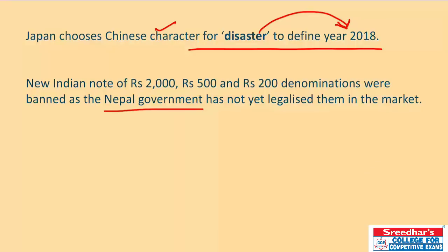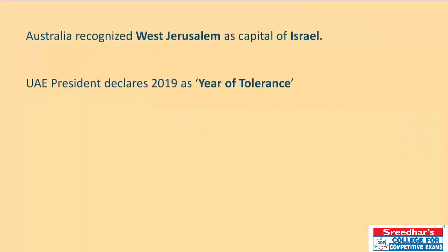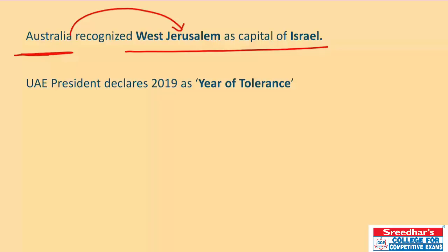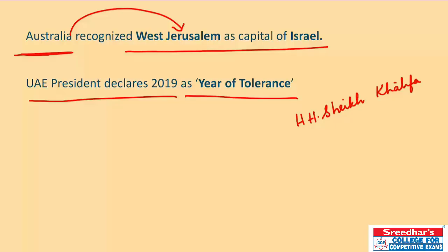Nepal's government has banned the new Indian series of ₹2,500 and ₹200 denomination notes, saying they have not yet been legalized in their markets — only old ₹100 rupee denomination notes can be spent. Australia has recently recognized West Jerusalem as the capital of Israel. UAE President HH Sheikh Khalifa bin Zayed Al Nahyan has declared 2019 as the Year of Tolerance.